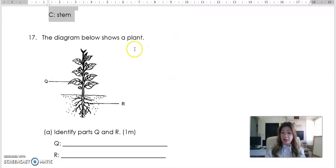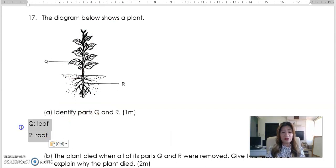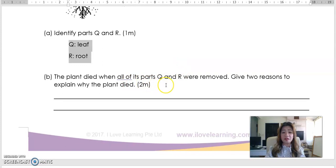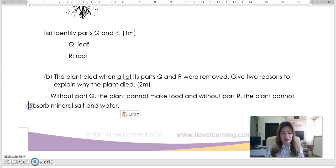And the diagram below shows a plant. Another question. So you see, they like to have you identify the plant parts. It's quite simple for P3. So Q is the leaf and the R is the roots over there. As long as they're pointing something inside, they wouldn't be asking you what's in the soil. So this is the two answers. Very simple for one mark. The plant died when all of its parts, Q and R, the leaf and the roots are removed. So when they are removed, what happens? Give two reasons to explain why the plant died. Very simple. What does the leaf do? The leaf makes food. Without food, we die. It's the same for the plants. And what does the root do? The root absorbs water.